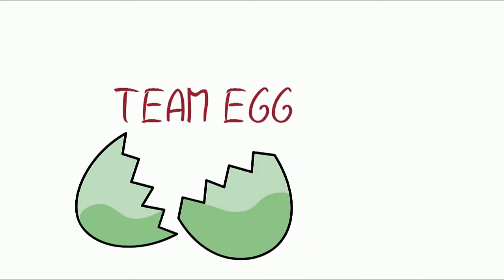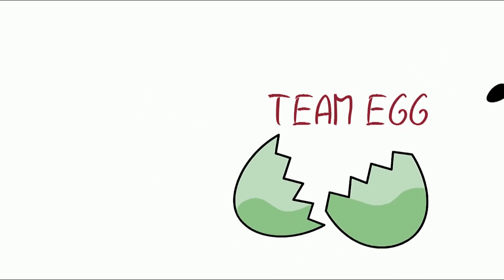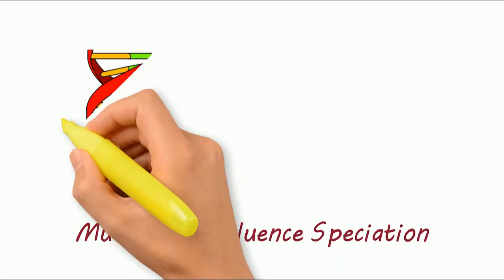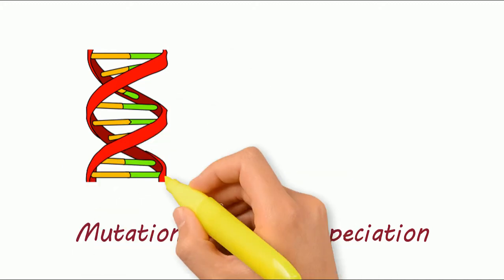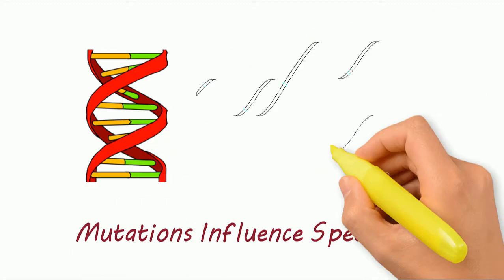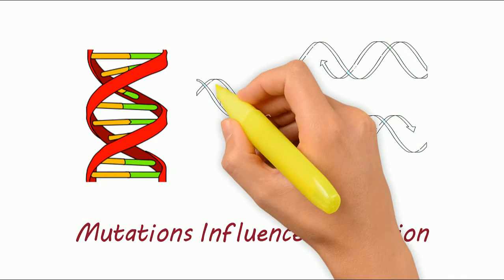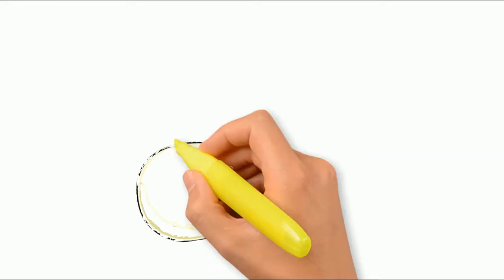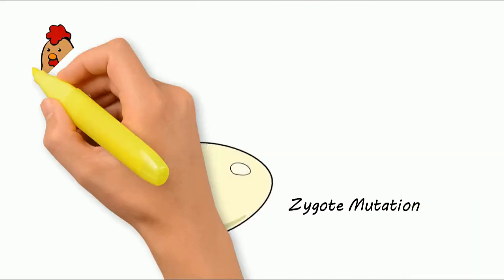Team Egg. During reproduction, two organisms pass along their genetic information in the form of DNA. But the replication of DNA is never 100% accurate and often produces minor changes in the new organism. These small mutations in DNA over thousands of generations create new species. But this genetic mutation must occur in the zygote or initial cell.